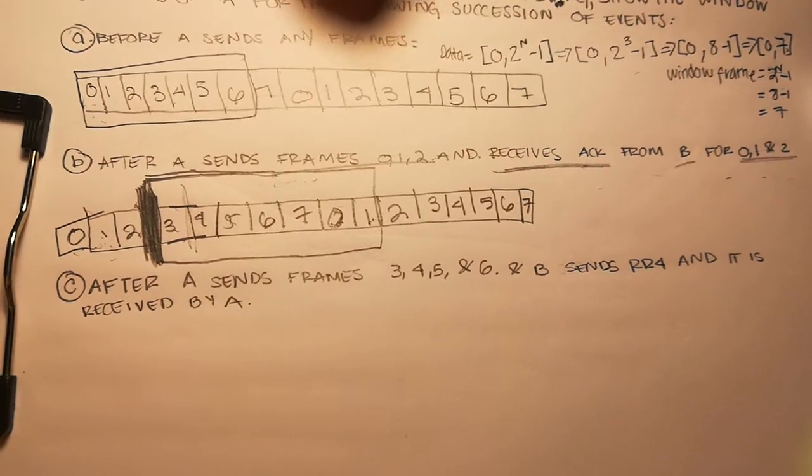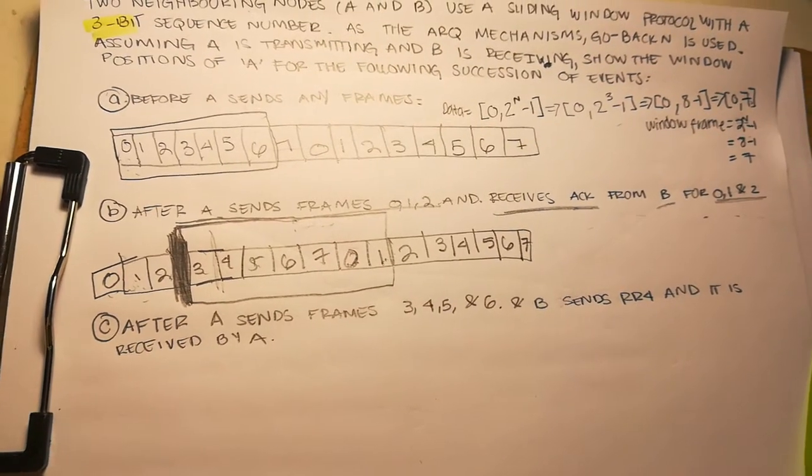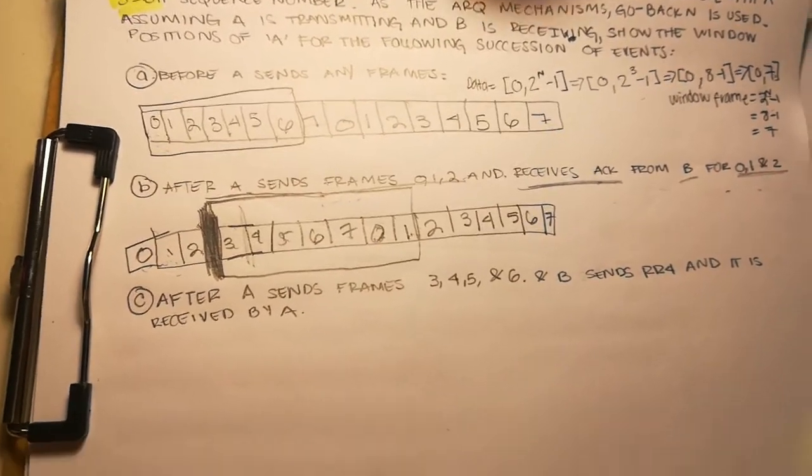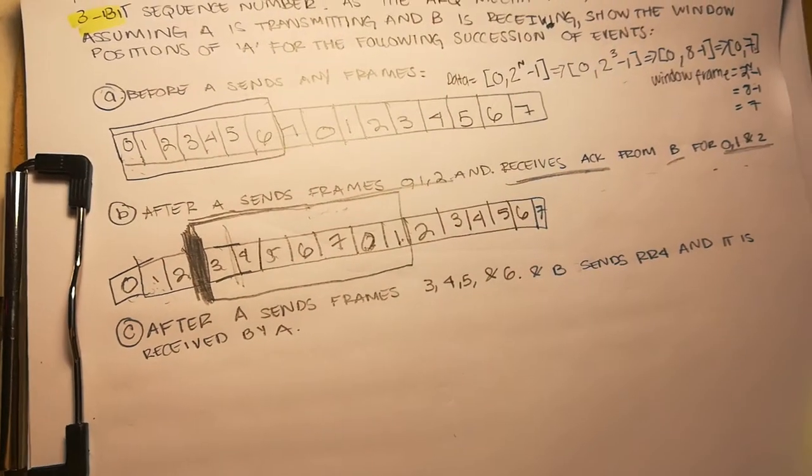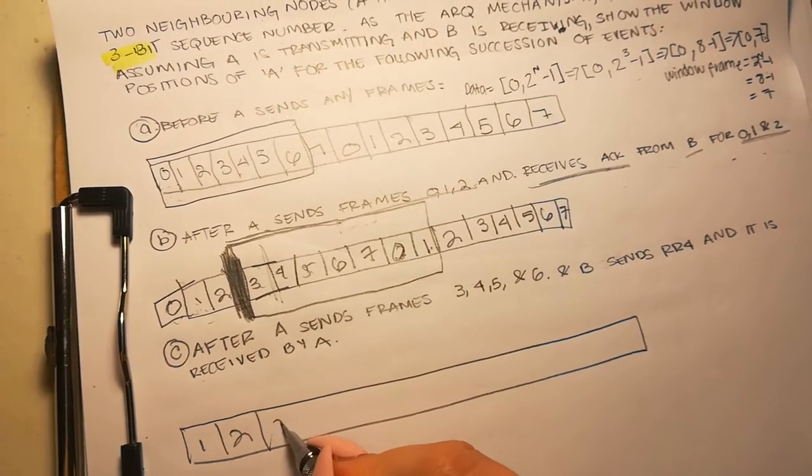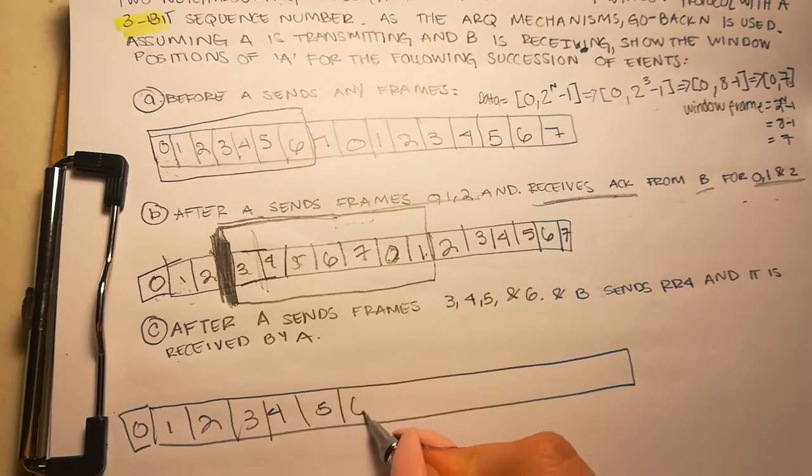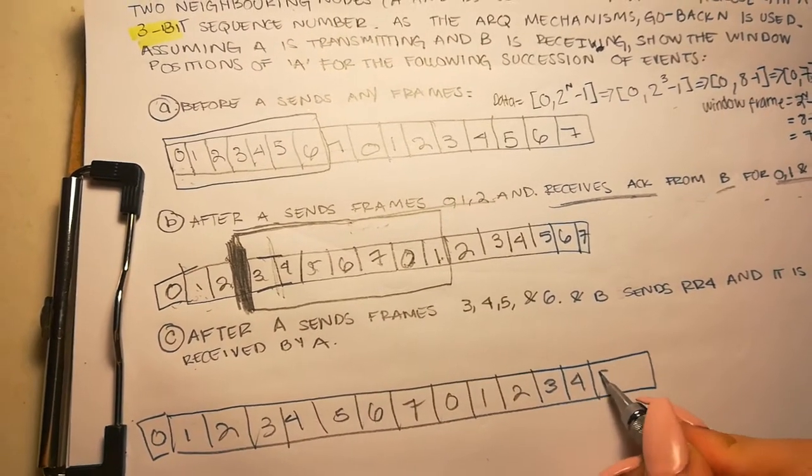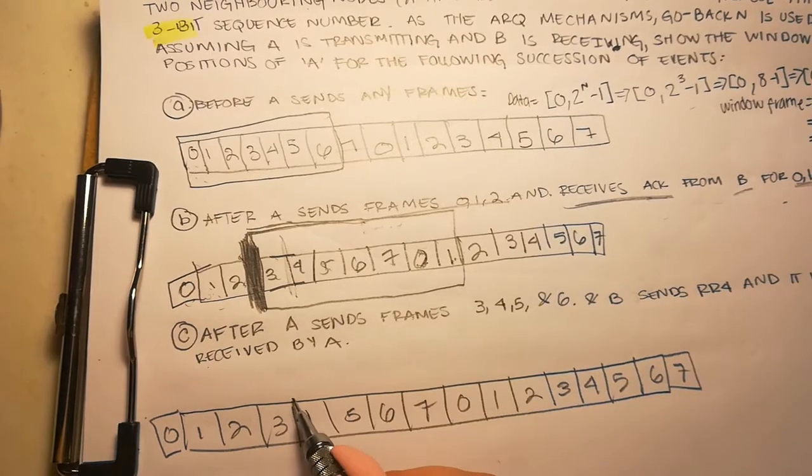Okay, one, two, three, four, five, six, seven—that's the size of our window because it grew because we got the acknowledgement. Now for part C, it says that after A sends frames three, four, five, and six, B sends ready-to-receive-4 and it is received by A. So what does that mean?